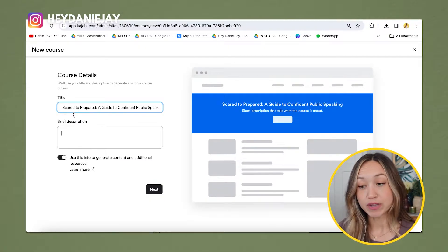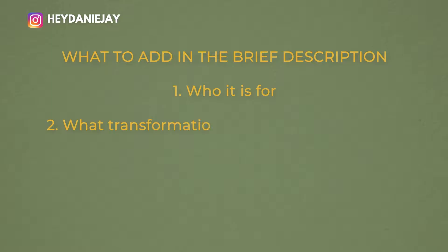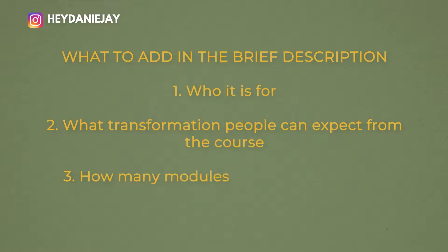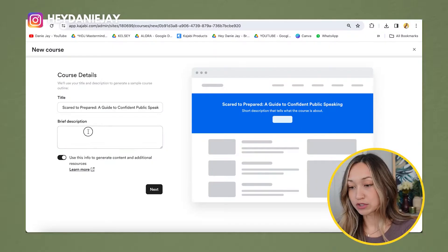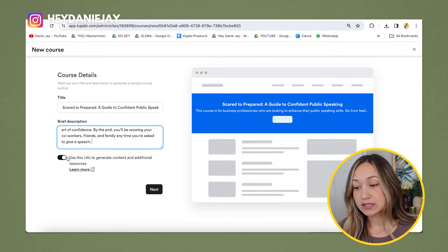Next, add a brief description. If you're going to use Kajabi's AI tool to build out your course, I recommend including three things: number one, who the course is specifically for; number two, the transformation or outcome people can expect; and number three, how many modules are in the course and the titles of those modules. For example: 'This course is for business professionals looking to enhance public speaking skills, going from overwhelmed to calm, cool, collected, and confident.'